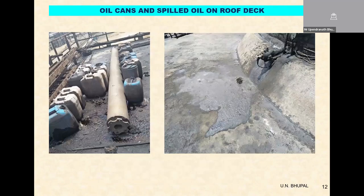This is another poor O&M practice: on the roof deck of an induced draft cooling tower, the O&M team was storing oil cans. On the right-hand side, you can see marks of oil being drained from the gearbox for maintenance. All the oil to be replaced was drained on the IDCT roof deck and eventually found entry into the cooling tower through the access hatch on top.